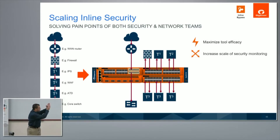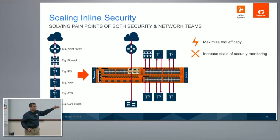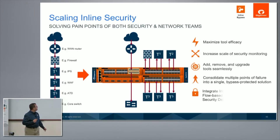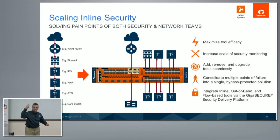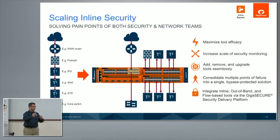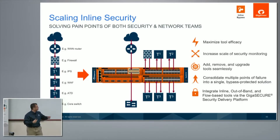For a long time Gigamon was known as: take a copy of traffic and feed it to tools. With inline bypass we became inline — all these tools could actually take action on packets, and if they drop it then the traffic actually gets dropped. The key advantages were making tools more efficient, and security tools love it because if they want to prove their efficacy, they simply connect to Gigamon, get a full out-of-band flow, prove their worth, and then the administrator can promote them inline with just a configuration change.